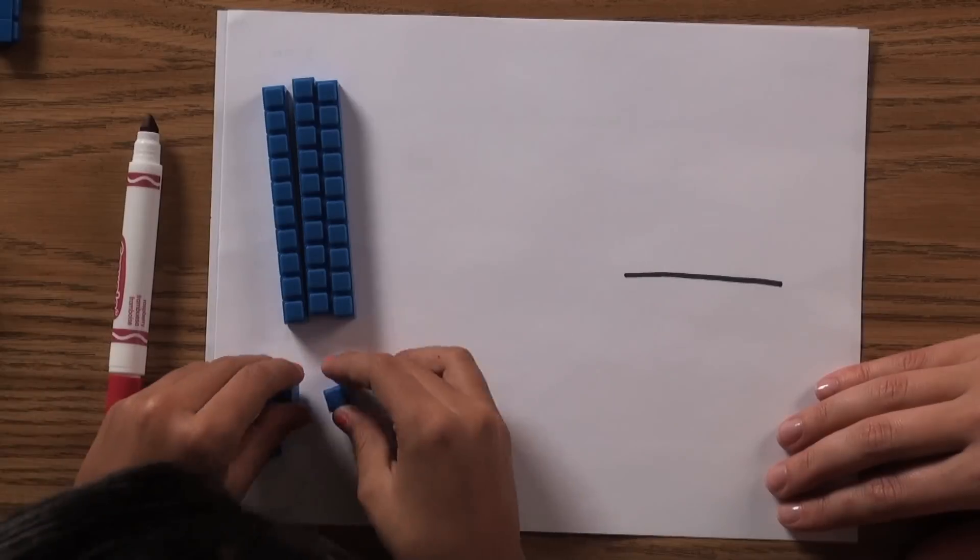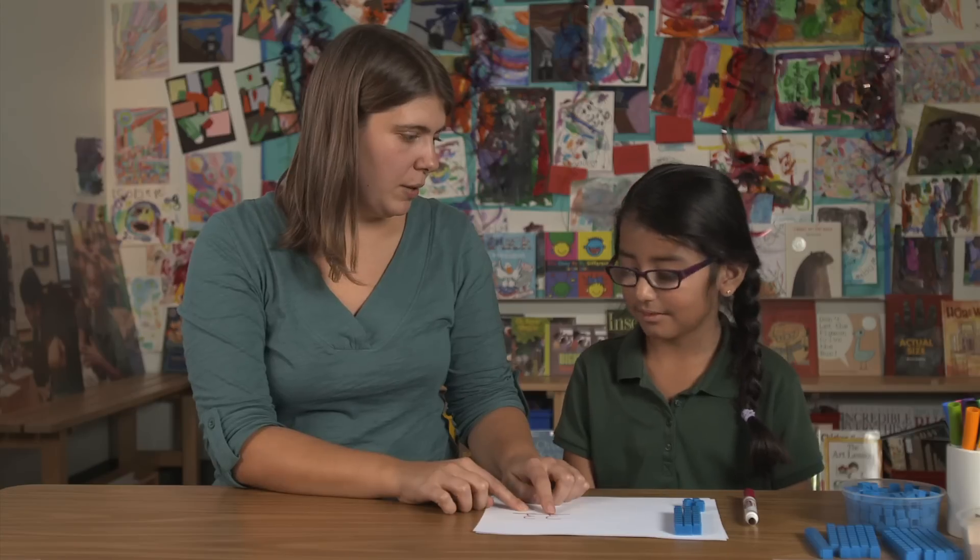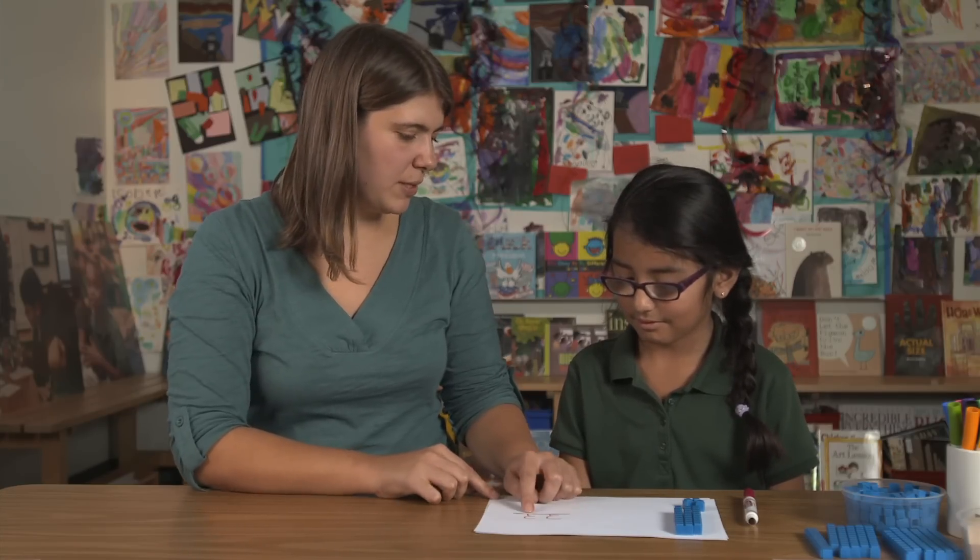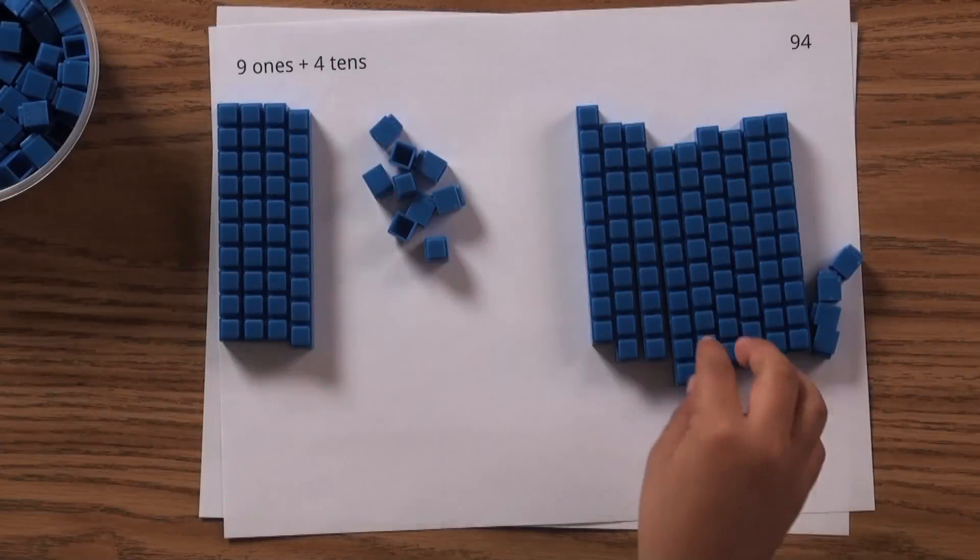But eventually, understanding and then explaining two-digit numbers will become second nature. 'Is this three worth the same as that three?' 'No, because three ones is only three, and three tens is thirty.' There are many ways kids can share their understanding of two-digit numbers.